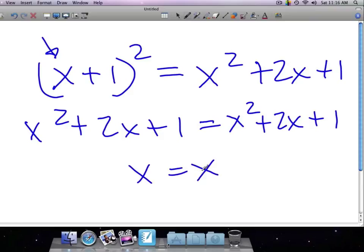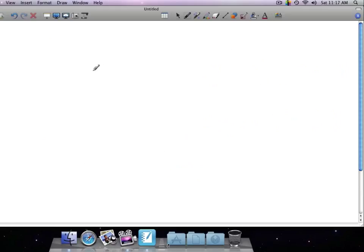This is also an identity. All values for x will make this work. That is not an identity because not all values for x will make that work. In fact, there's only one value for x that'll make that work.